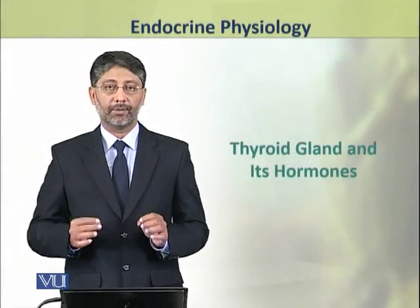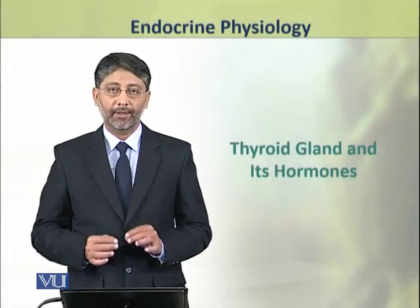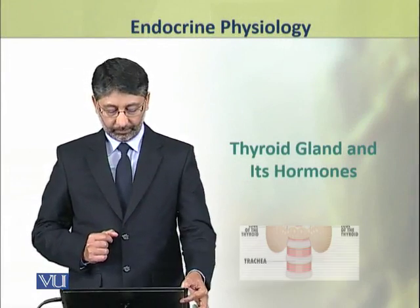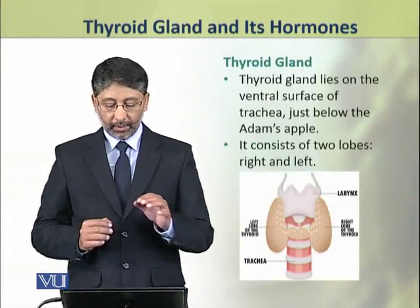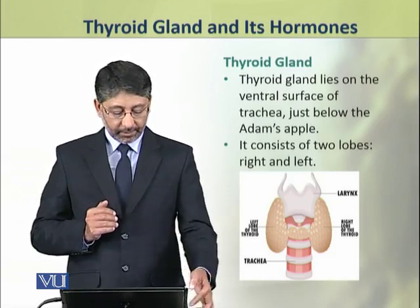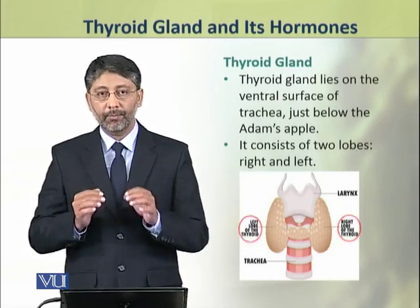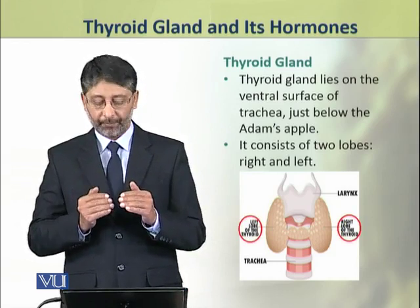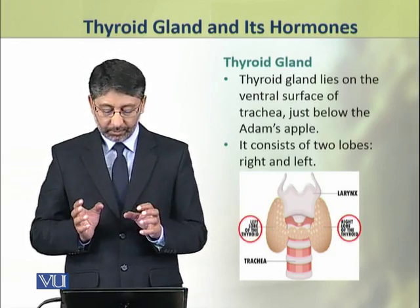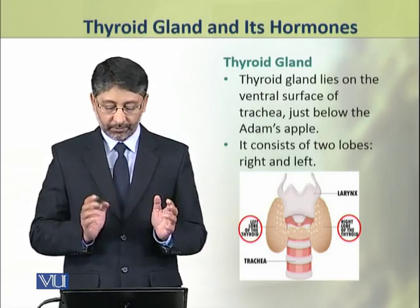Dear students, in this topic we shall discuss thyroid gland and its hormones. Thyroid gland lies on the ventral surface of trachea just below the Adam's apple. It consists of two lobes: right and left lobes.